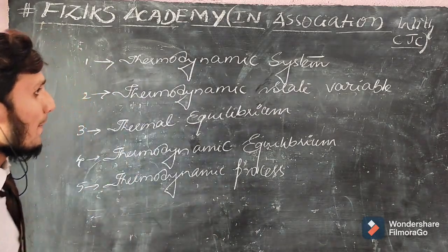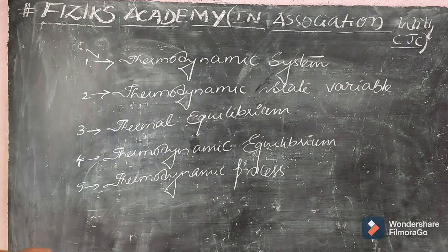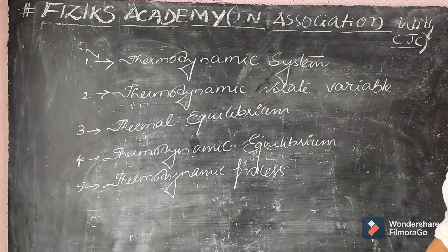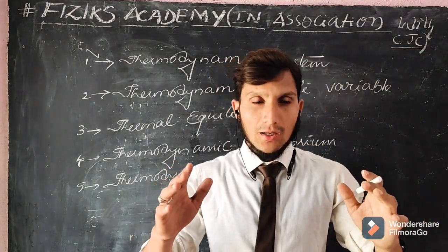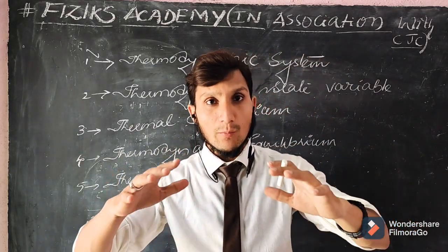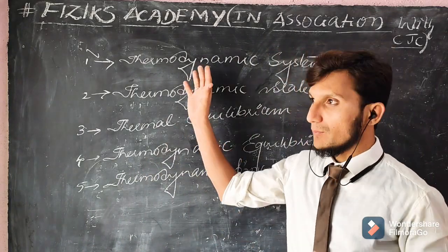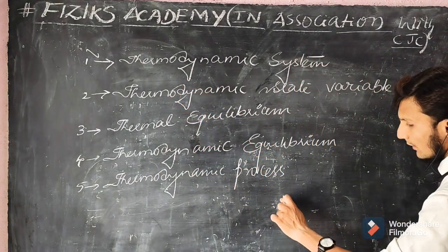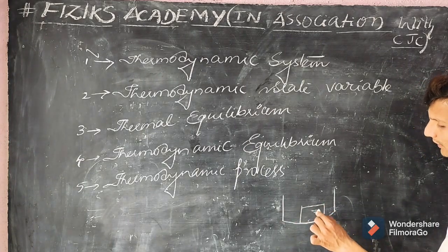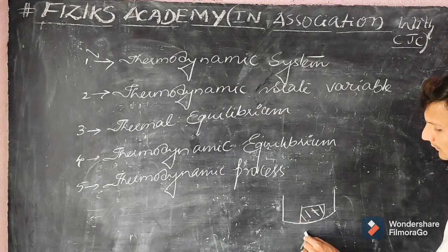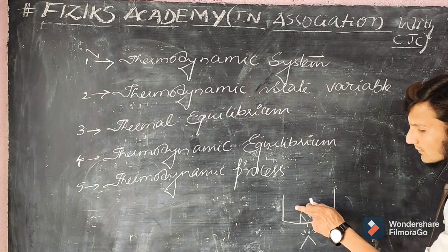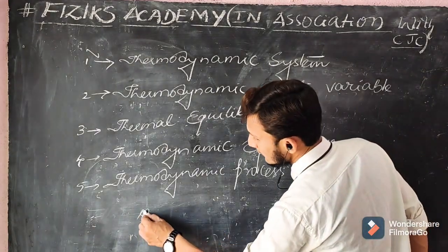Today's first topic is the thermodynamic system. A thermodynamic system is a particular or specific area under consideration on which we perform thermodynamic study. For example, consider a container with an ice cube inside. As you heat the ice cube, it starts melting — changing its state from solid to liquid.